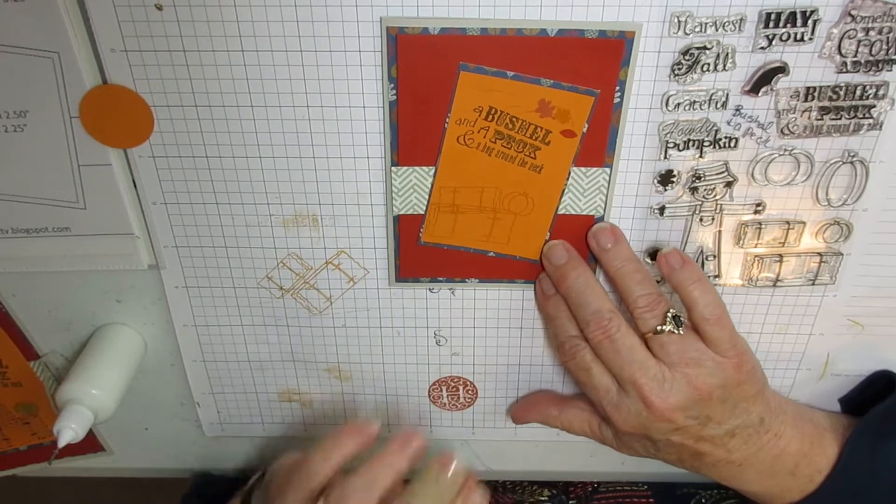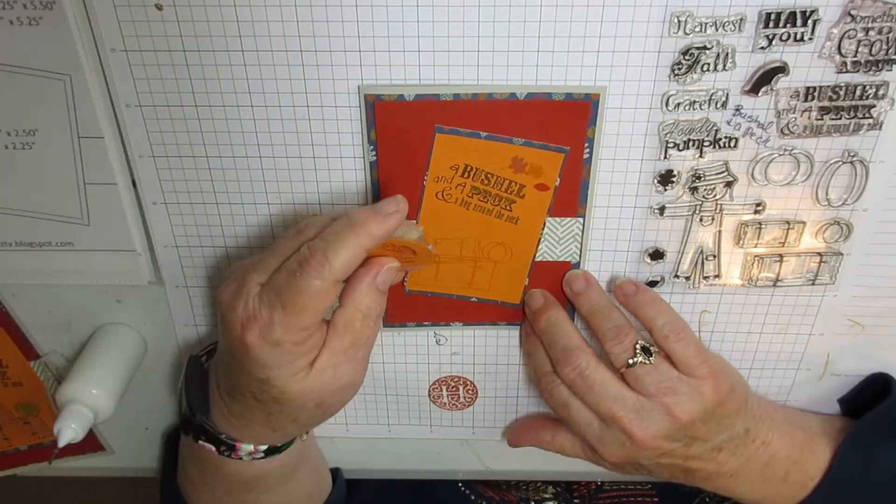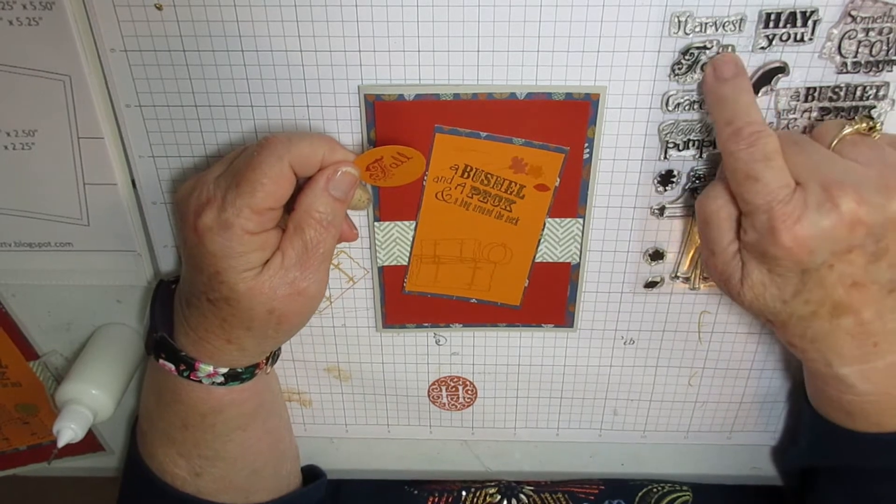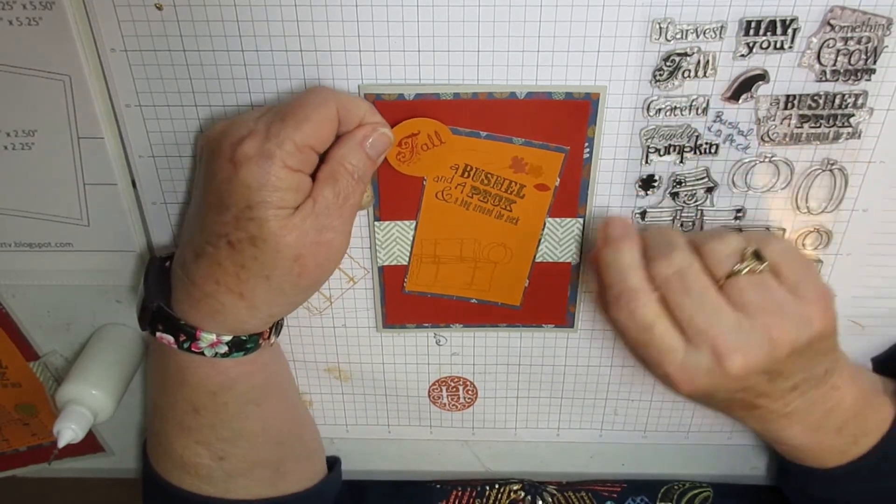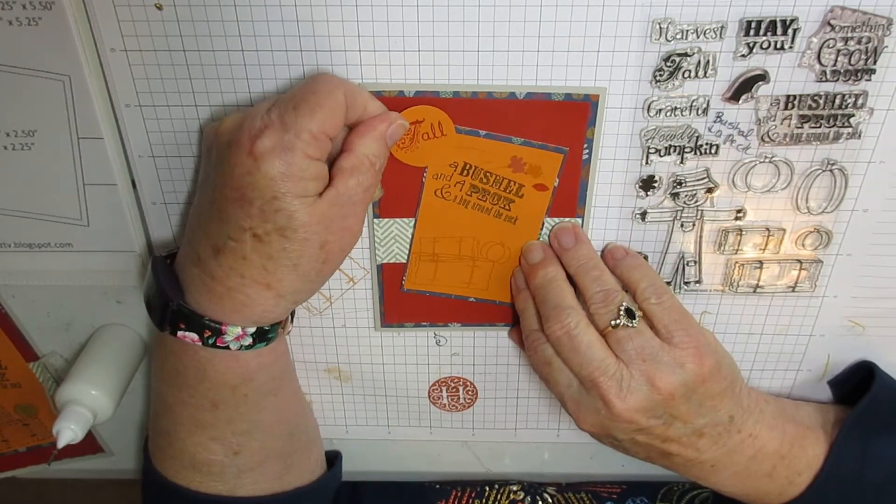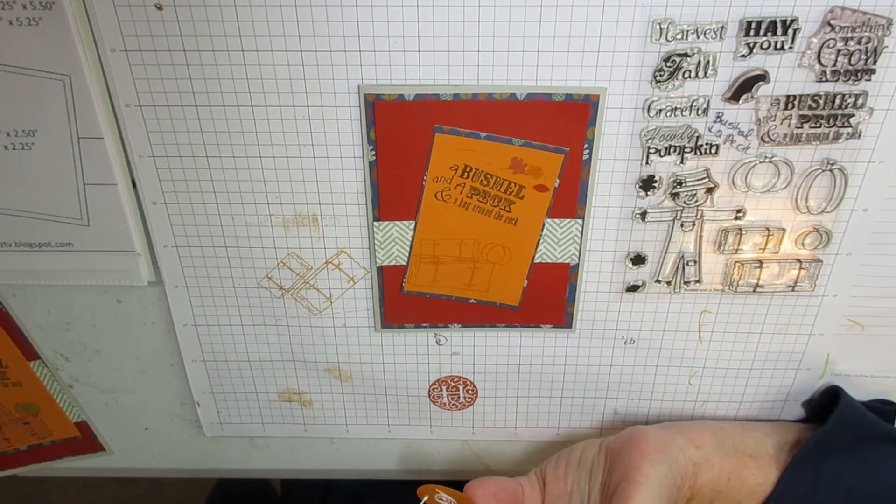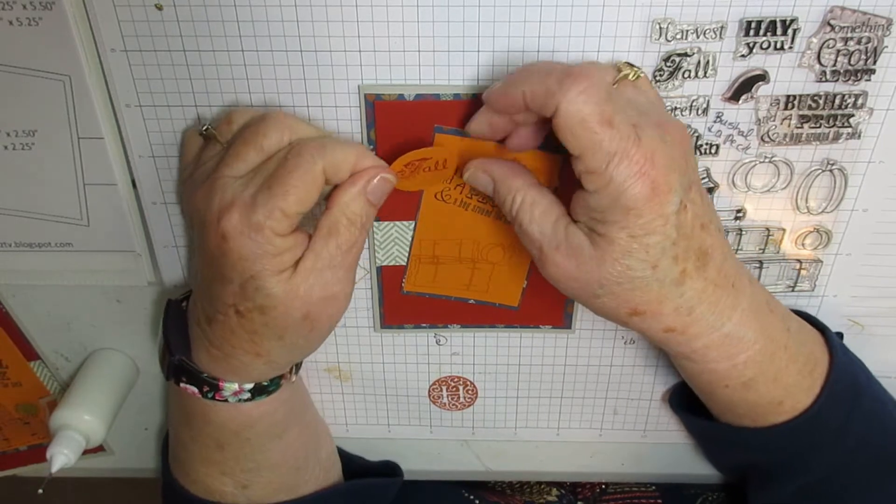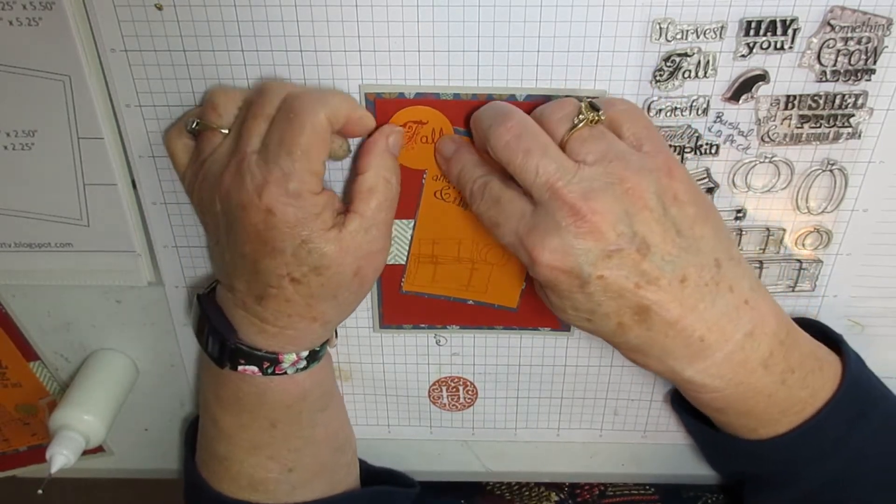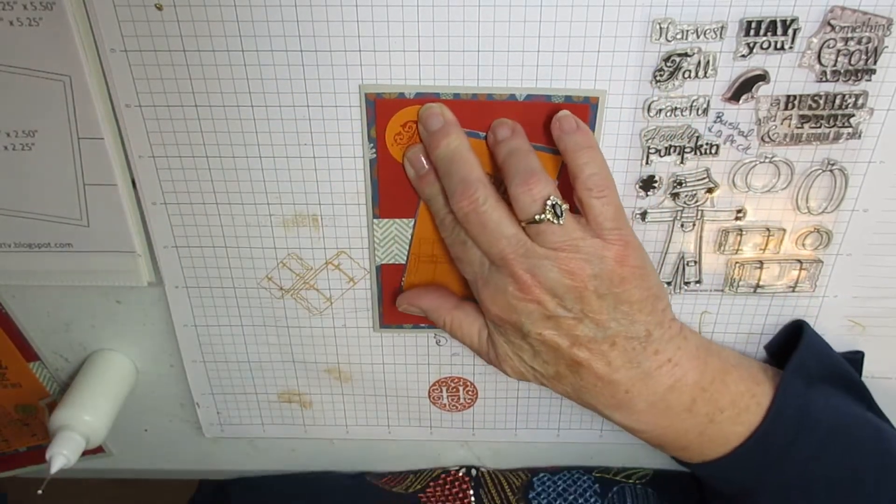This one is going to be plain and I'll just do something at some point. I also used another part from this one that says fall and I'm going to put that up in the corner like on Mary's design. It's a one and one-fourth cut circle.